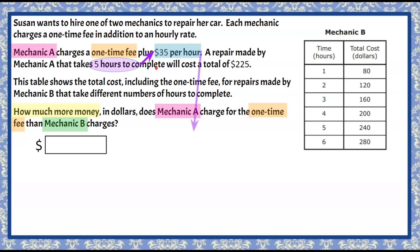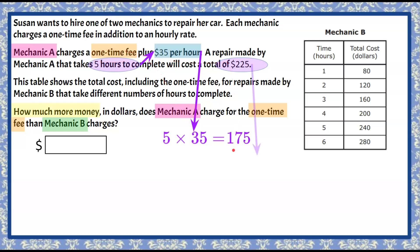Let's calculate that. Five times 35 is going to be $175. We know that the total amount of money paid was $225, and how much they made per hour — 35 times 5 — is $175. So if we subtract these two values, that will give us our one-time fee. $225 subtract $175 for the five hours of work is $50.